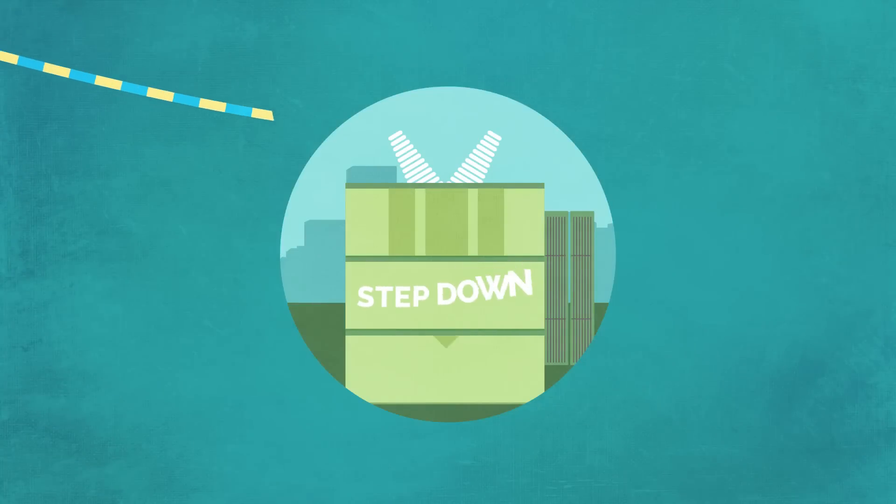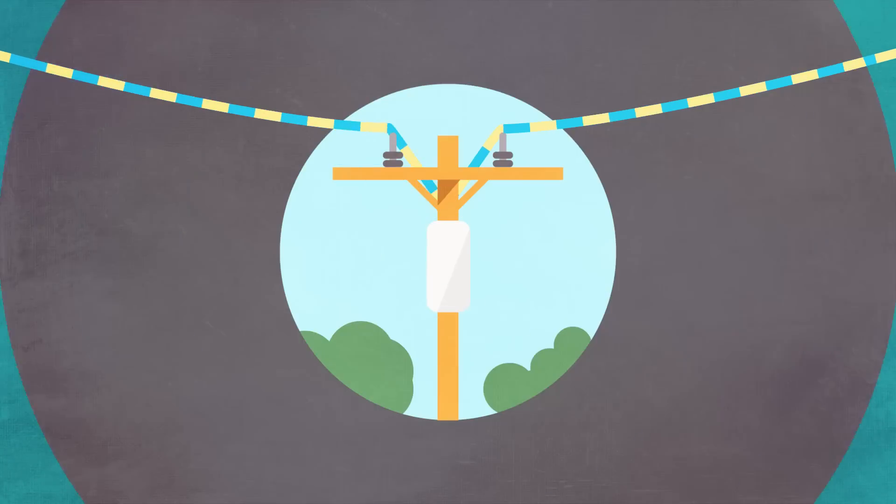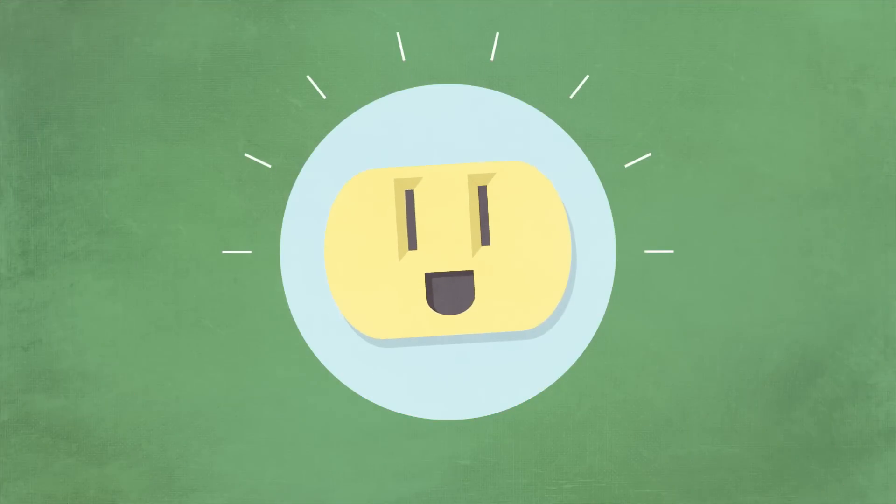Once it reaches your city or town, a step-down transformer lowers the voltage. Smaller transformers in your neighborhood step down the voltage one more time to a level that's friendly to your electronics.